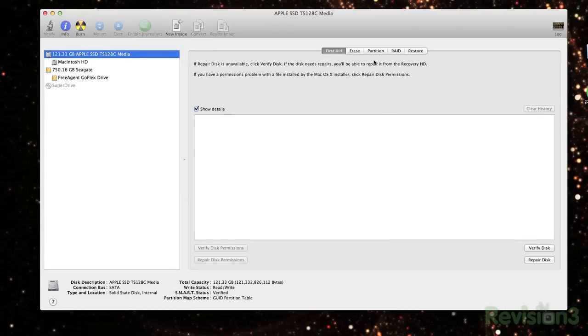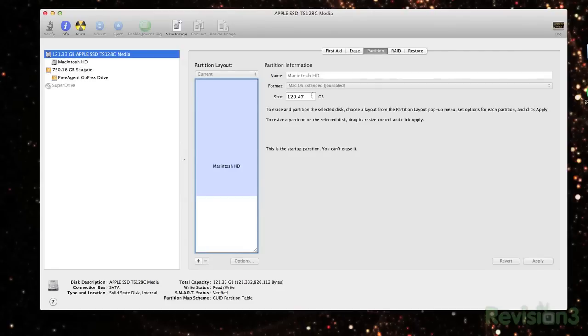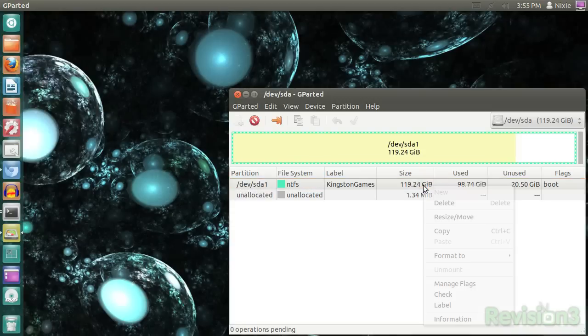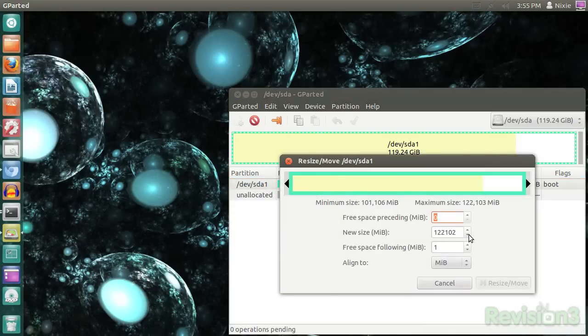In Mac OS X Lion, you can open Disk Utility, choose Partition, and Resize Partition. In Linux, GParted will do the same thing after choosing your device, the partition menu, and then Resize Move.